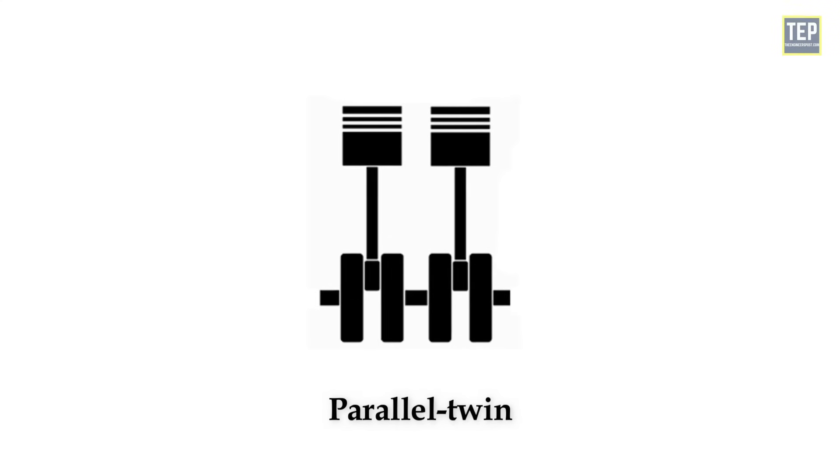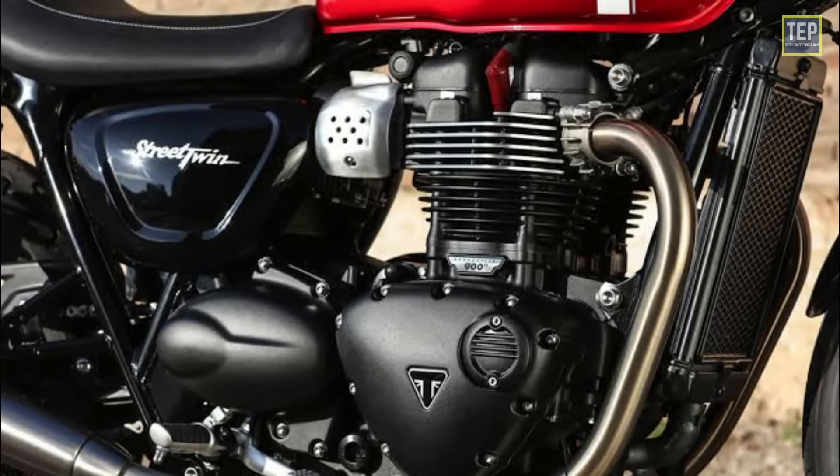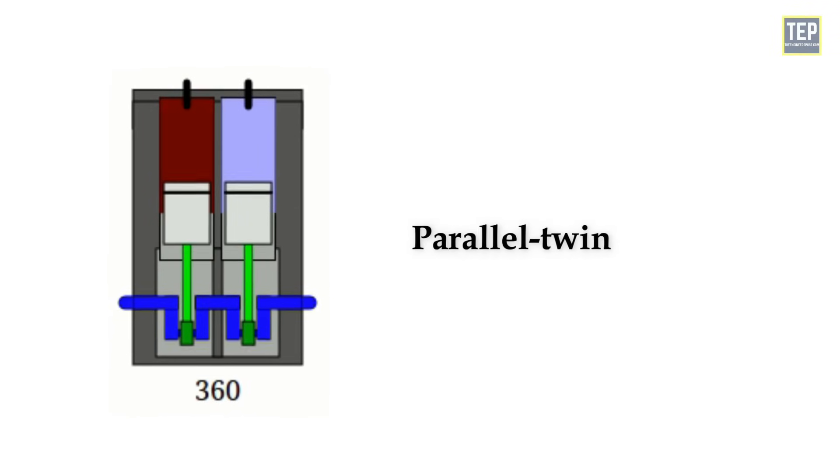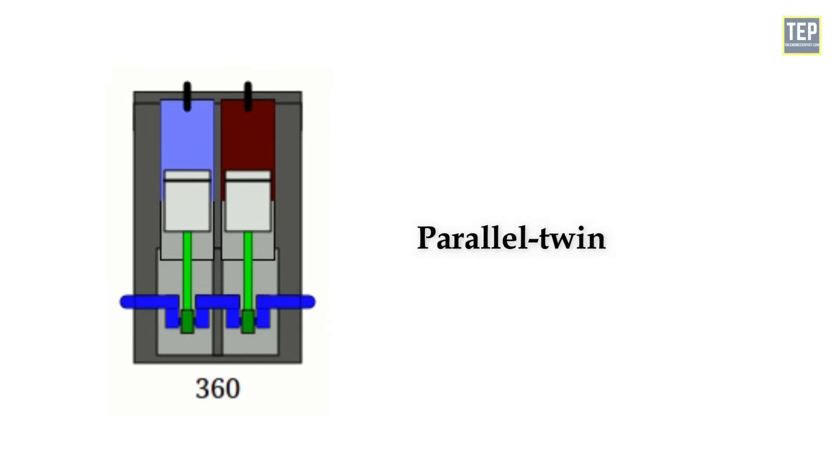In a parallel twin engine, the cylinders are placed transversely with the frame, a typical setup for a straight twin engine. If the pistons move together up and down, in other words, if they move simultaneously parallel to each other, that sort of setup is called a parallel twin engine.